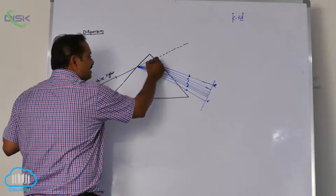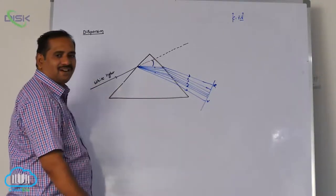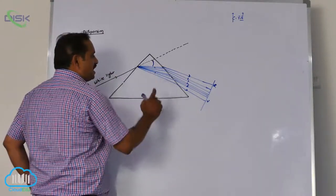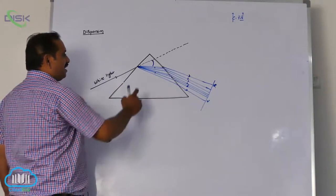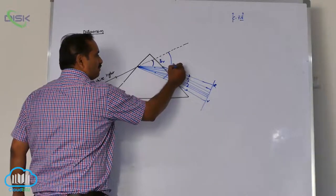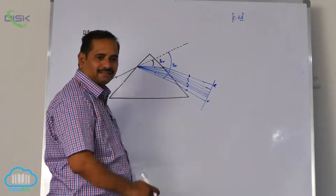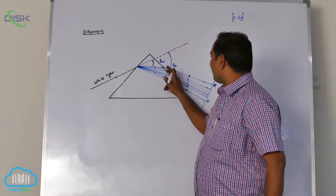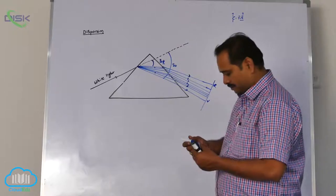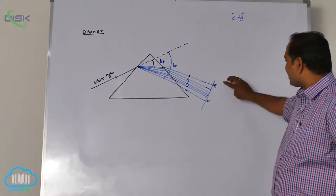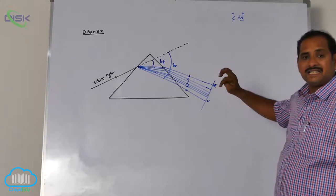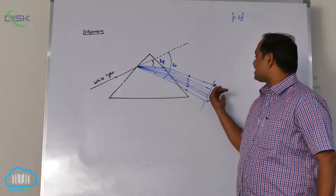The angle between the incident light and the emergent light is called the angle of deviation. If you observe the diagram, red color deviates less and violet color deviates more. Red color has a larger wavelength and less energy, so it deviates less.